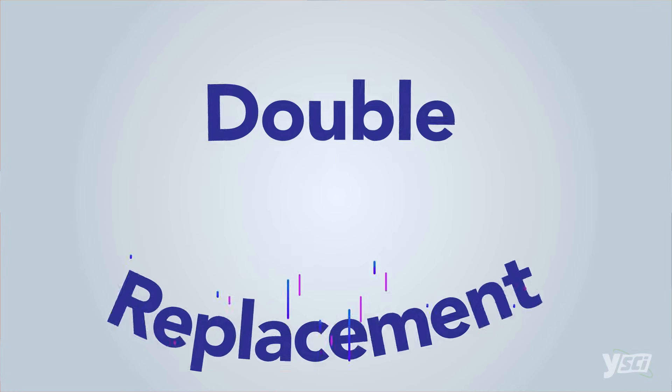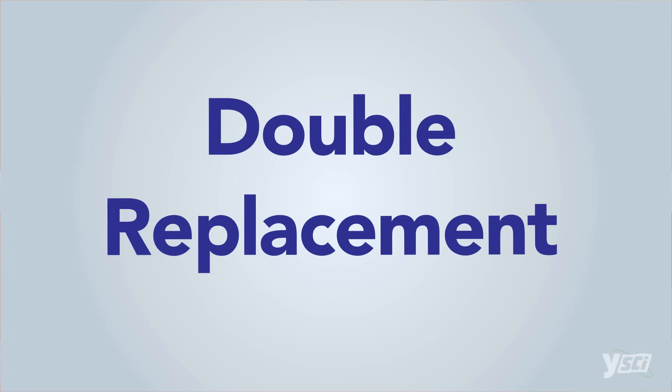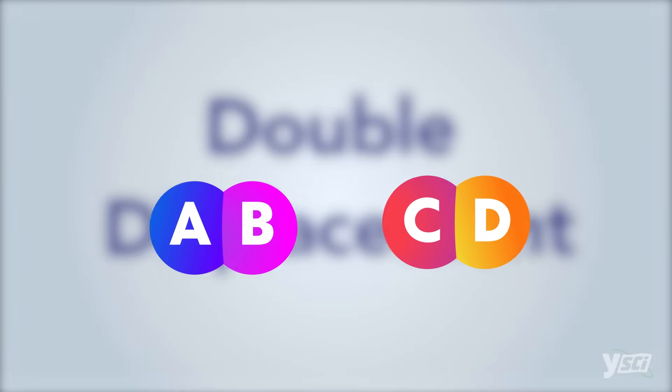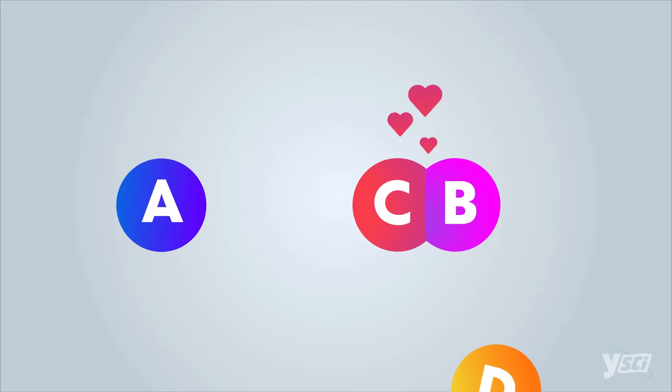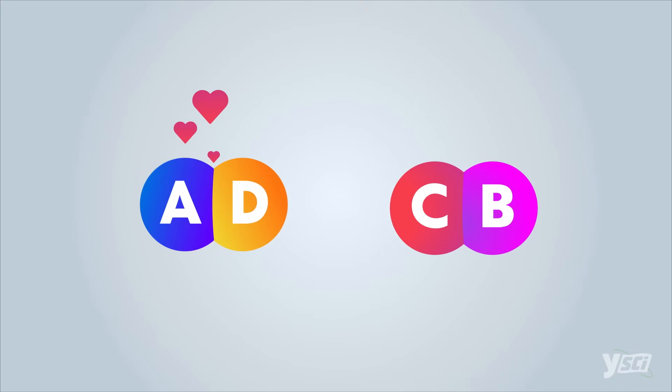In a double replacement reaction, also called a double displacement reaction, the positive ion of one compound replaces the positive ion of the other to form two new compounds.